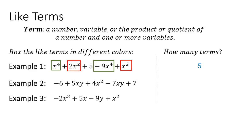In example 2, negative 6 is a constant so I'm putting a box around that, and 7 is another constant so I box that as well. Then 5xy and negative 7xy are like terms — I include the negative in that box. We have 4x squared with no other x squared terms. So we have five terms in this expression as well. In example 3, there are no like terms, so no boxes, but we do have four terms in that expression.